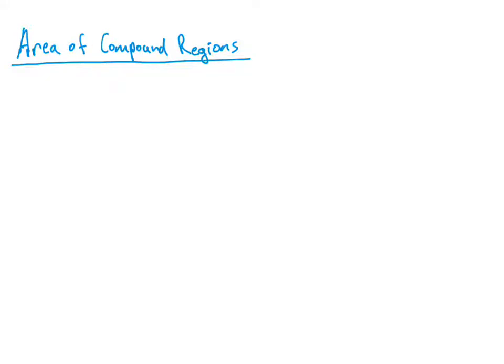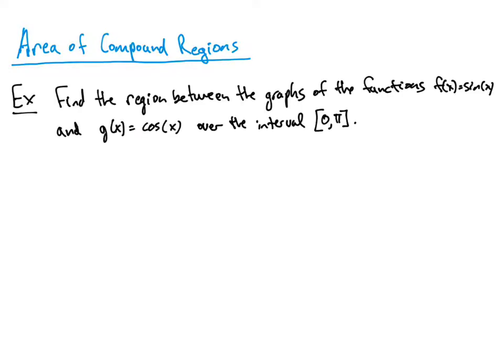In this video, we'll be going over the area of compound regions. By compound regions, all that we mean is that we're going to have to find more than one region and find the sum of those two regions to get the total area between two curves. We'll look at an example: find the region between the graphs of f(x) = sin(x) and g(x) = cos(x) over the interval 0 to π.